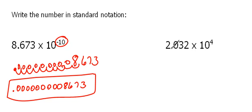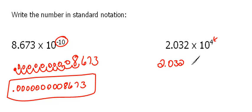Now over here we have 2.032 times 10 to the 4th power. Since we're multiplying by 10 to the 4th, this is a very large number — 10 times 10 times 10 times 10 — so that's going to make this decimal much, much larger. So if we have 2.032, we're going to move it 4 places to the right to make it a bigger number. Moving 4 places to the right, I have to add in a zero so that I have the proper number of places, giving us 20,320.